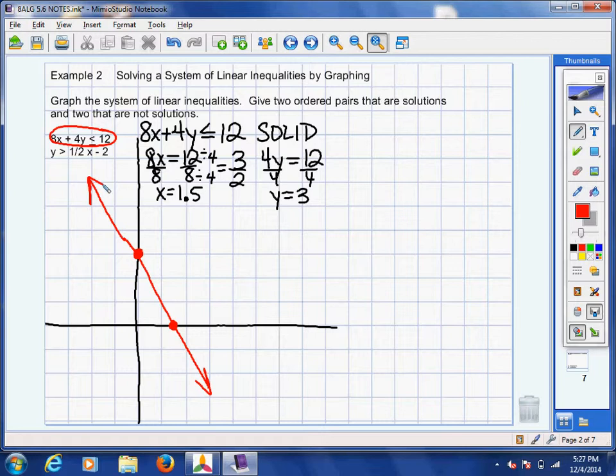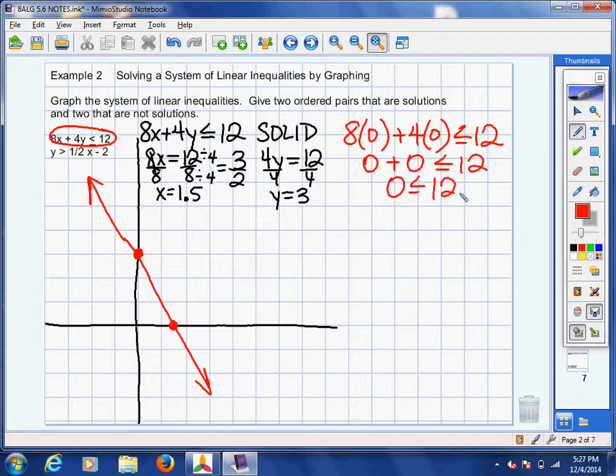And then we need to figure out which side to shade. Got to figure out which side's the less than side. So, you know me, I like zero zero. So I'm going to plug in zero for the x, there it is, and zero for the y. And is that actually less than 12? So zero plus zero less than or equal to 12, and the answer is yes it is. So you're going to shade the side that has zero zero on it. That would be the left side of your red line.